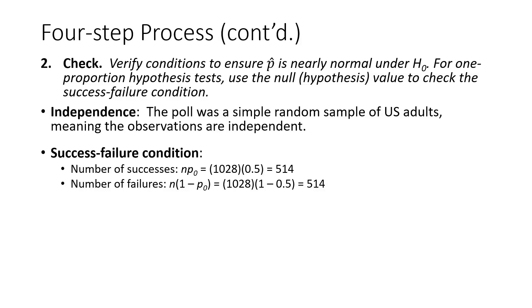That kind of makes sense that it would be half and half, right? 514 successes, 514 failures, because the null value was one half. Since both of these values are greater than or equal to 10, the success-failure condition is met.